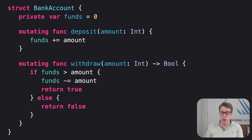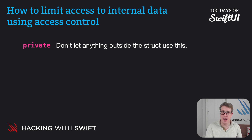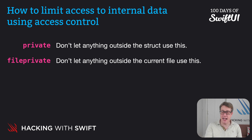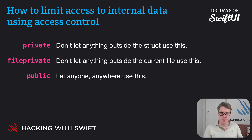Swift gives us several options. When you're learning, you only need a handful. First up, use private for places where nothing outside the struct should be allowed to use a property or method. Use fileprivate for the same thing but outside the current file — so two pieces of code in the same file with fileprivate can read the data correctly. And thirdly, use public for anyone, anywhere who can use this. Those are the three main ones.